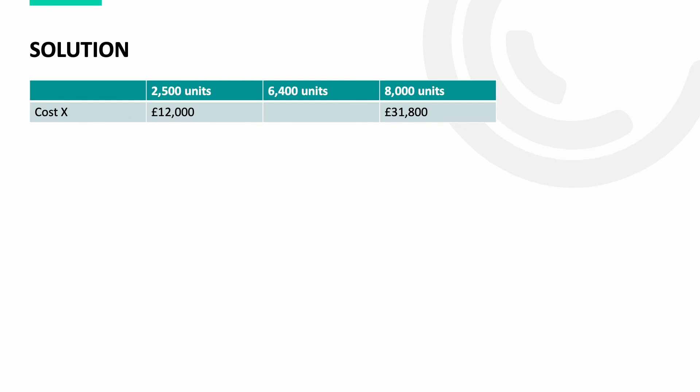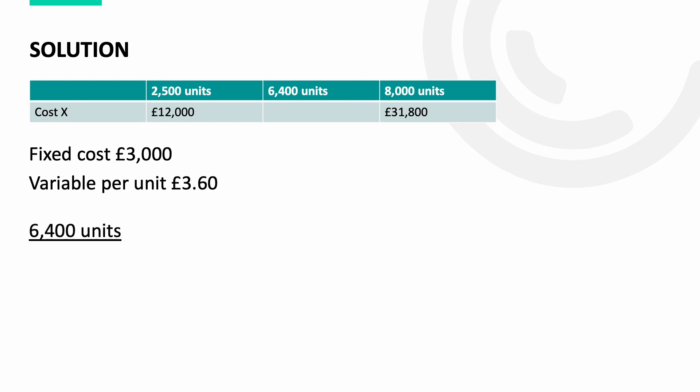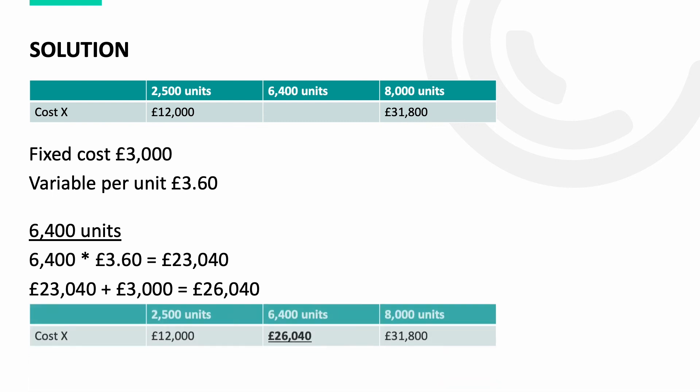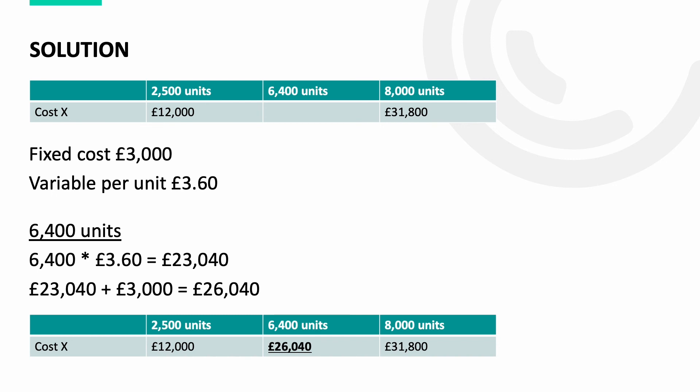Putting it all together to calculate the cost for 6,400 units: 6,400 multiplied by the variable cost per unit of £3.60 gives £23,040. We then add the £3,000 fixed cost to give a total of £26,040, which is our semi-variable cost for 6,400 units.